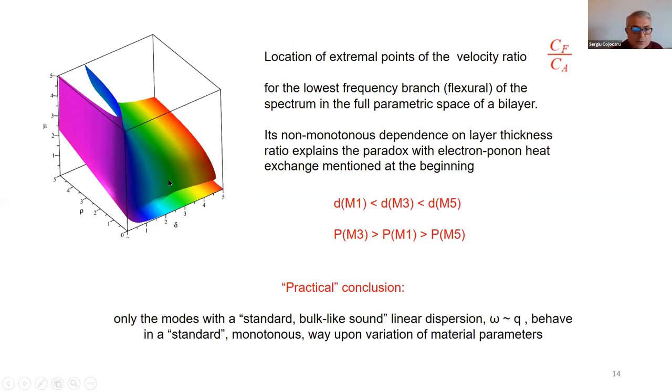This last view graph shows the positions in the full parametric space defined by the scaled parameters of the extrema I have just shown before. The surface is quite complicated and it tells about rather non-trivial dependence on material parameters. I just mention that we plugged in all our results into the formulas obtained earlier for the electron-phonon heat transfer and we could reproduce the experimentally observed paradox in the radiation detectors.